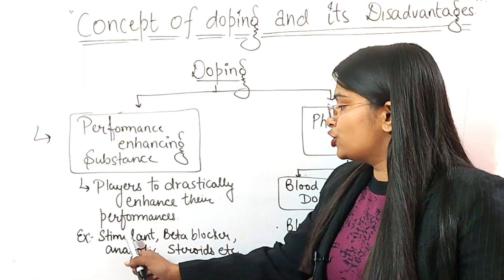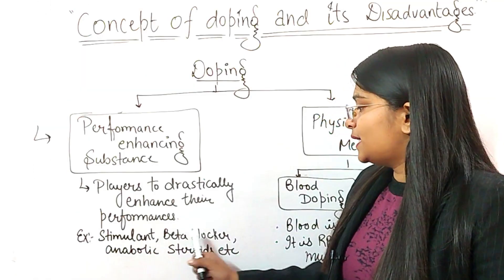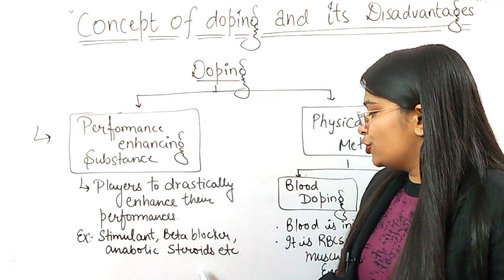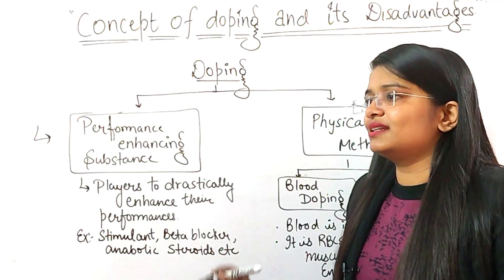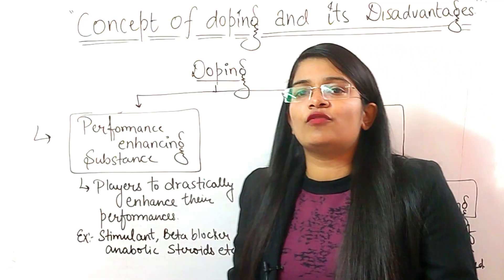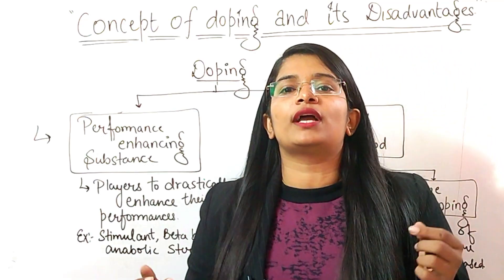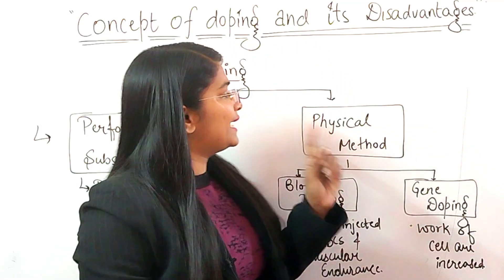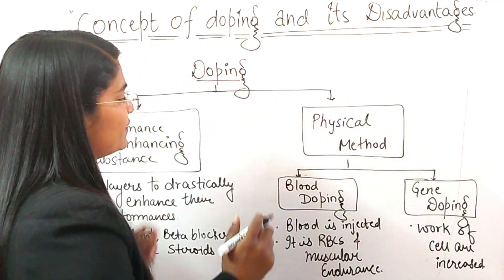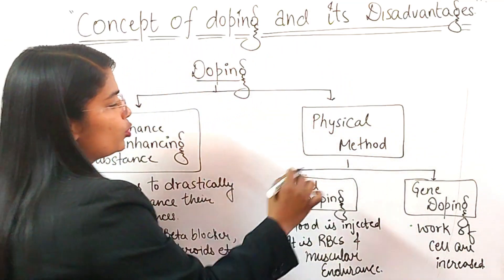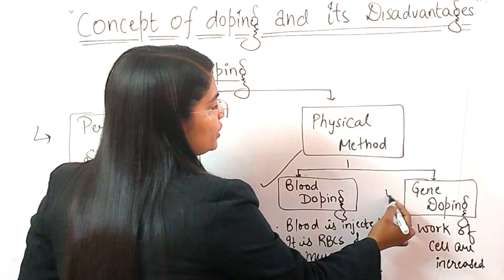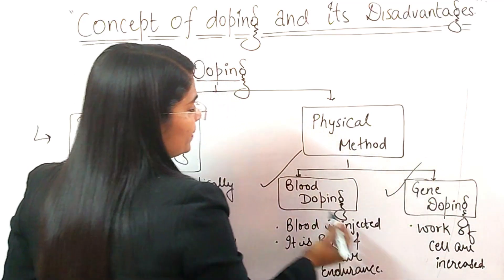Examples of Performance Enhancing Substances include stimulants, beta blockers, anabolic steroids, and others — all of these boost a player's performance. Under Physical Methods, there are two types: blood doping and gene doping.